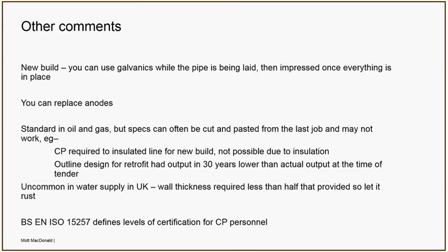For new build pipelines, it takes time to build a pipe and install an impressed current system. There's no reason you can't stick galvanics in to protect the pipe while it's being laid, and then once everything is in place and joined together you can install the impressed current system. You can also feasibly replace anodes — it involves digging a hole and access, but it can be done as a routine maintenance item. You can replace the anodes every 20 years and look at the current those anodes are passing at end of life to size the next system, rather than guessing how much coating is left.